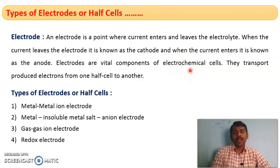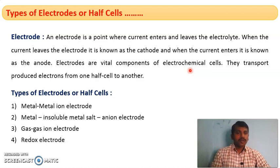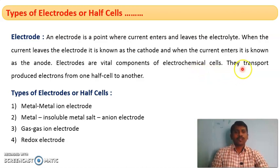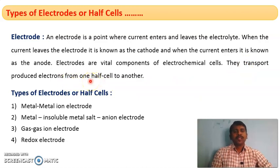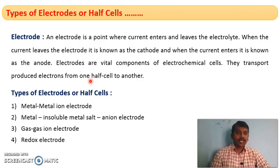Electrochemical cells are galvanic cells. They are composed of two half cells, each half cell containing an electrode. Electrodes are very important components of electrochemical cells; their function is transportation of electrons. Transport of produced electrons will be done by the electrodes. An electrode put in an electrolyte forms one half cell. Two such half cells will give us a complete cell. Electrodes are half cells.